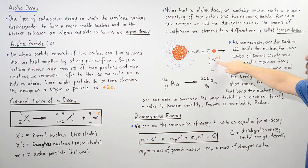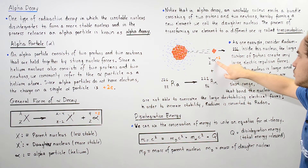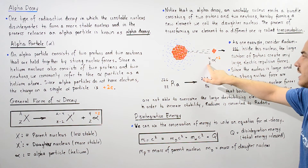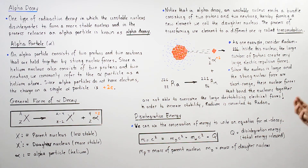The alpha particle has a charge of positive 2, four nucleons, and two protons.